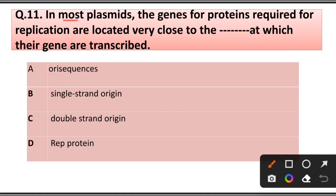Question number 11: Though in most plasmids the genes for proteins required for replication are located very close to the site at which their genes are transcribed: A) ori sequence, B) Single-strand origin, C) Double-strand origin, D) Rep protein. Answer is option A, ori sequence.